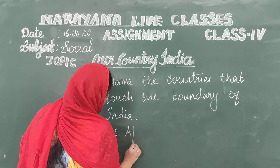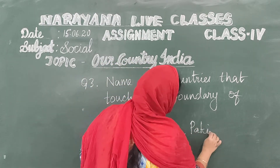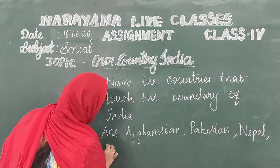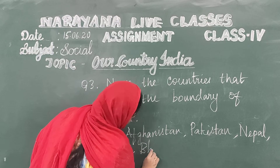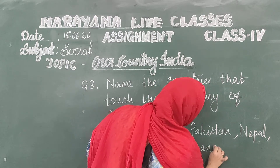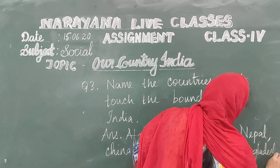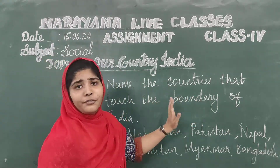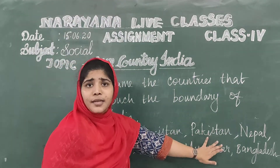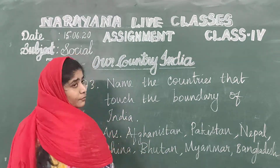Afghanistan, Pakistan, Nepal, China, Bhutan, and on the eastern side we have Myanmar and Bangladesh. So the countries that touch the boundary of India are: Afghanistan, Pakistan, Nepal, China, Bhutan, Myanmar, and Bangladesh. Clear children? We will move on to the next question.